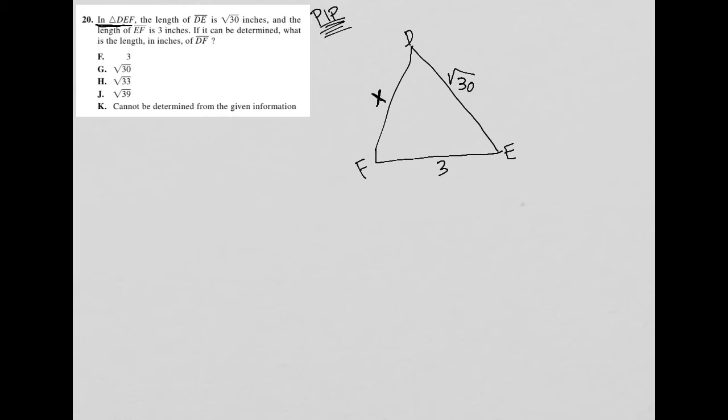We don't know if it's a right triangle. We don't know if it's an isosceles triangle. We know nothing about this triangle besides these two lengths. I can only find a missing side length of a triangle.